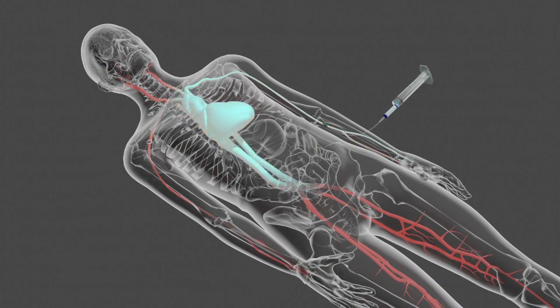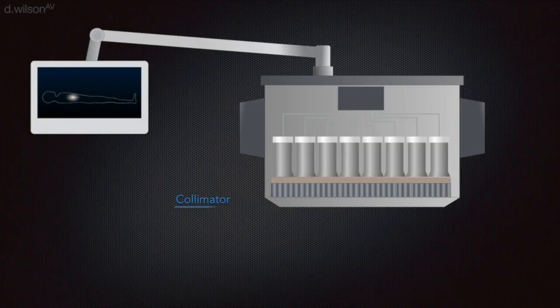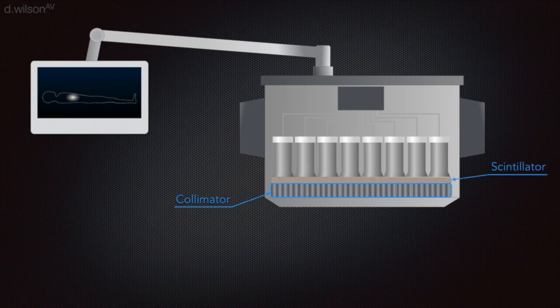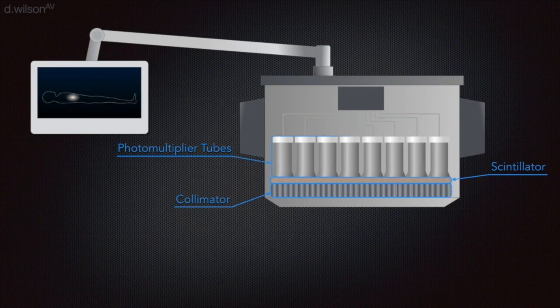The first part of the gamma camera is a collimator. It absorbs gamma rays that do not travel parallel to the plates, improving image resolution. The gamma rays that pass through the collimator strike a scintillation crystal.